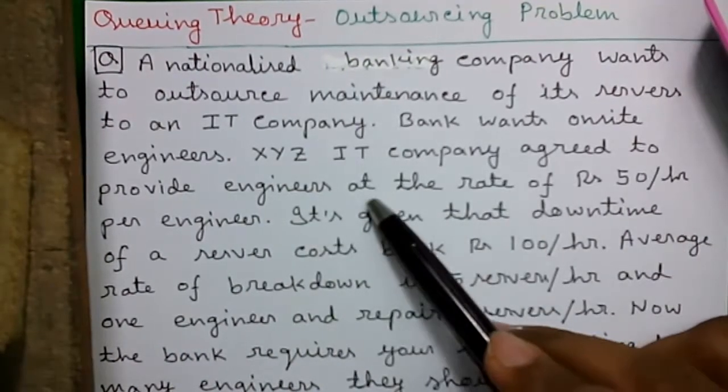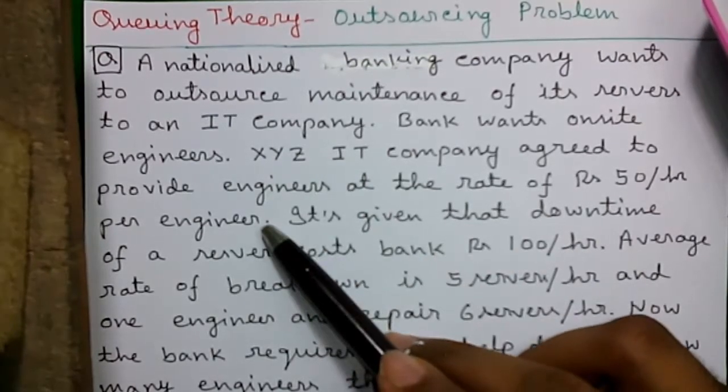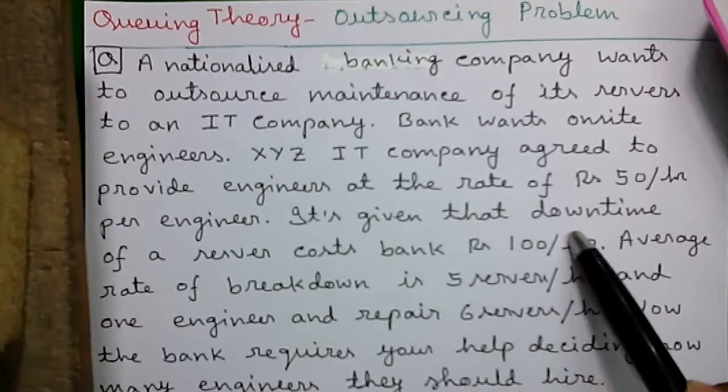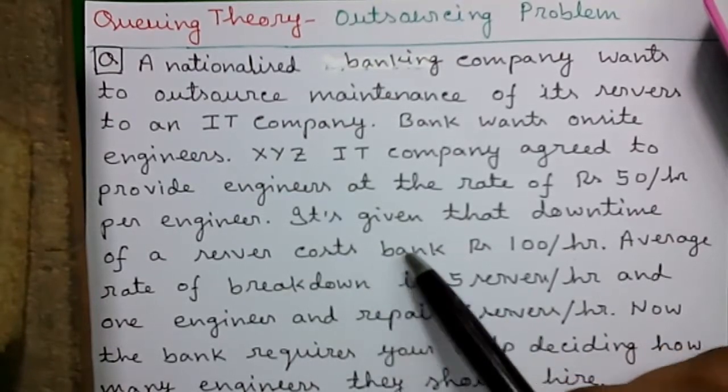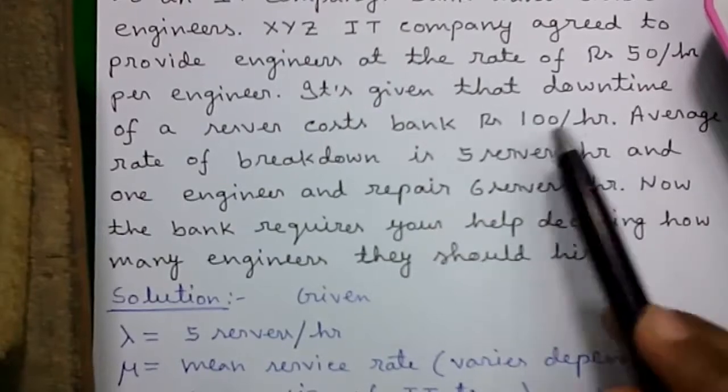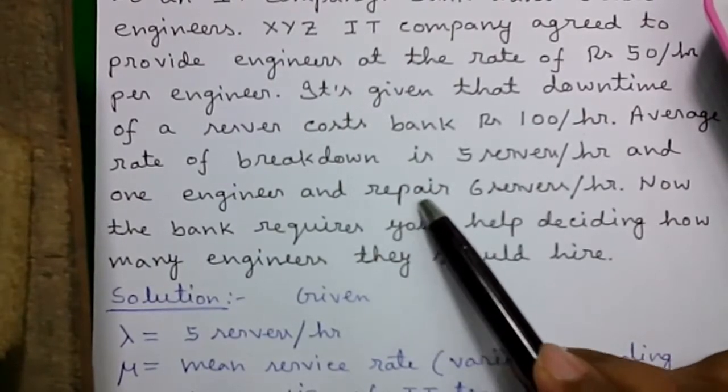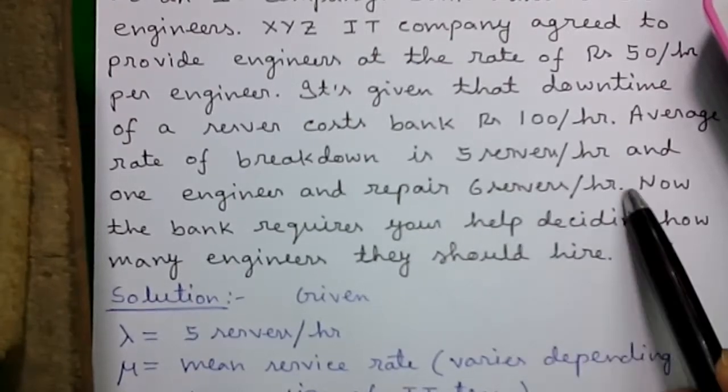XYZ IT company agreed to provide engineers at the rate of Rs 50 per hour per engineer. It's given that the downtime of a server costs the bank Rs 100 per hour, the average rate of breakdown is 5 servers per hour, and one engineer can repair 6 servers per hour.